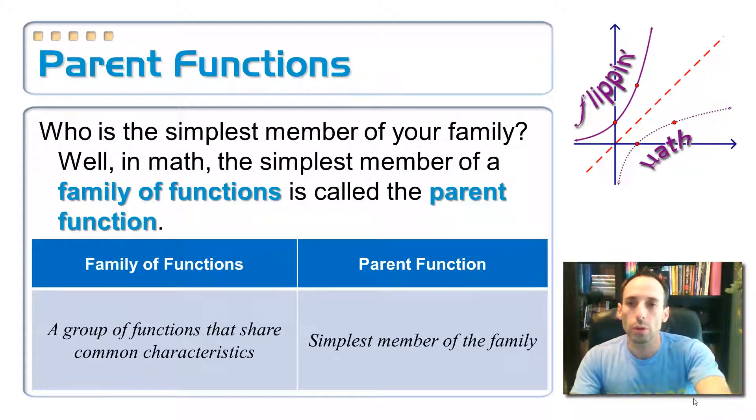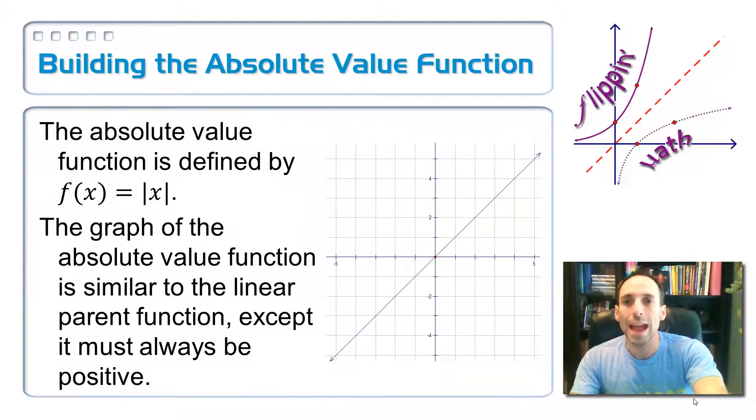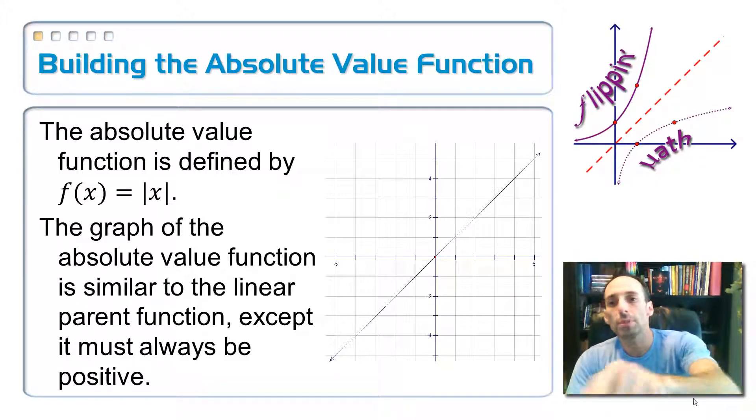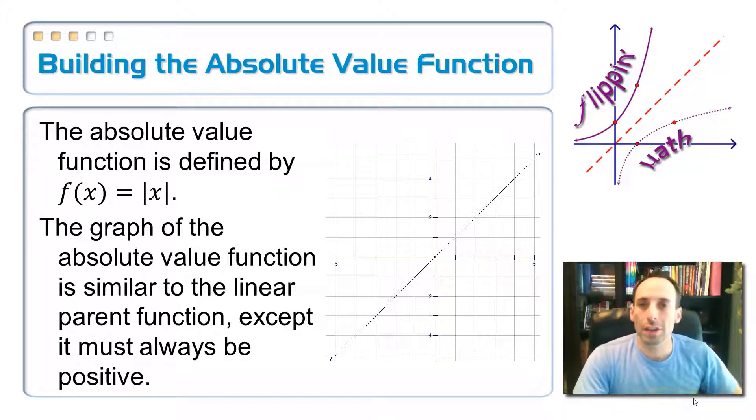So what we're going to do is we're going to start by building the absolute value function graph. This graph is going to look very familiar to you here shortly. So the absolute value parent function is f of x equals absolute value of x, or y equals absolute value of x. So we've done absolute values before, but there was no y in there. There was just the absolute value of x or something a little bit more complicated than that. So now we have two variables. We have an x and a y.